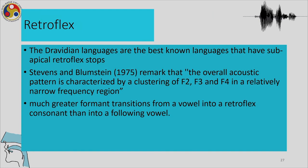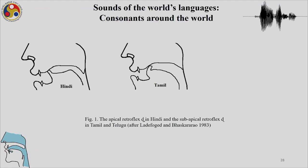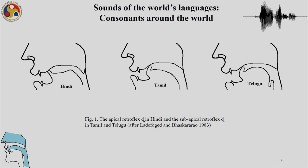Dravidian languages are best known to have sub-apical retroflex stops. Importantly, the acoustics of retroflexes also show that the overall acoustic pattern finds F2, F3, and F4 in a relatively narrow frequency region, with much greater formant transitions from a vowel into a retroflexed consonant and then into a following vowel. In Hindi the retroflexion is apical, while in both Tamil and Telugu we find sub-apical retroflexion — that is, the surface behind the tongue tip making a gesture to form the retroflexion.